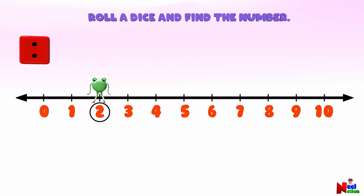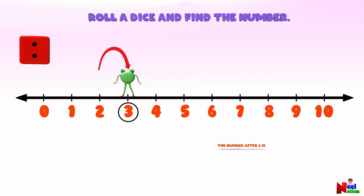There you go. Now can you find the number that comes after number two? To know that, you need to take one jump forward to the right. Mr. Luthu has landed on number three. The number after two is three — number three!